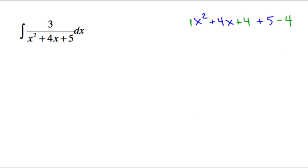So it actually doesn't change the value. So now this is a perfect square, I can write that as x plus 2 squared. And this is my other piece here, 5 minus 4 is 1.